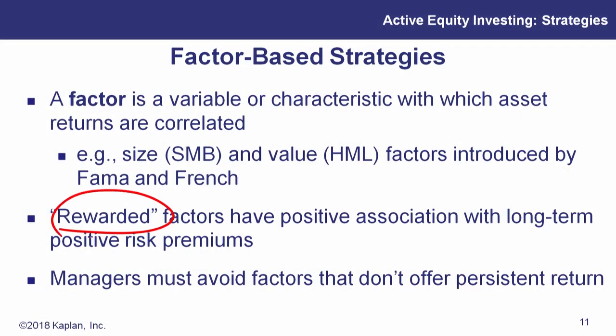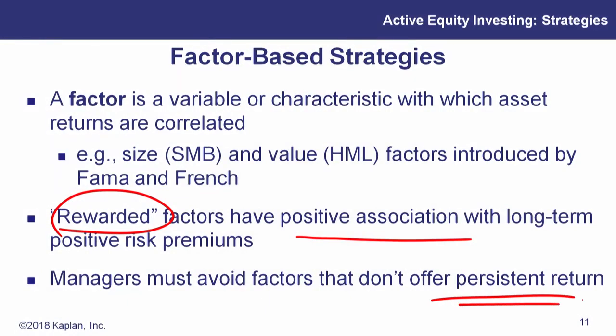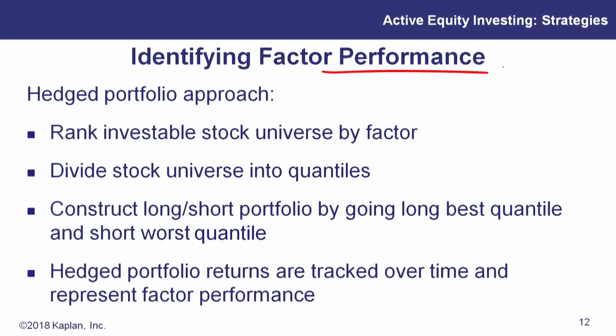So why do we care about factors? Because they have a positive association with long-term risk premiums. If we can overweight our portfolio and maximize our exposure to this good factor, we can actually make more money. And more importantly, we want to underweight factors that aren't consistent with positive risk premiums. Defining what a factor is and how you're going to build your portfolio and how to optimize it, that's really what we're getting at in this chapter.